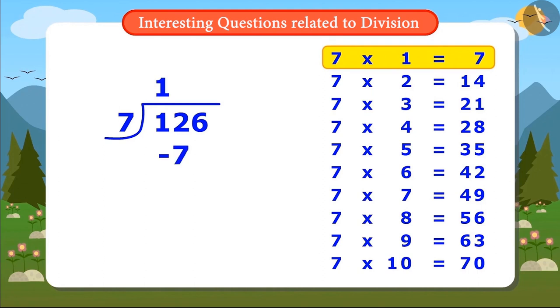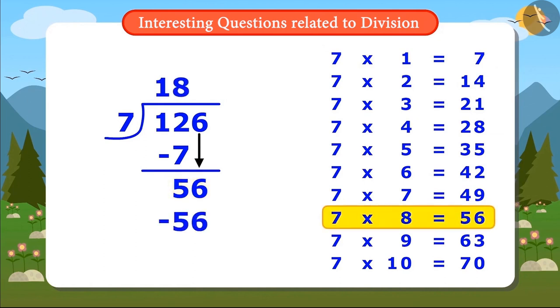7 times 1 is 7. Left 5, right? Let's write down 6. So it's 56. 7 times 8 is 56. Remainder 0. The answer is 18. This means that if you spend 7 rupees per day, then you will spend 126 rupees in 18 days.